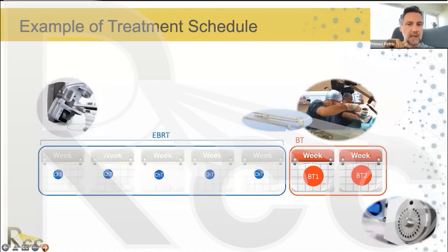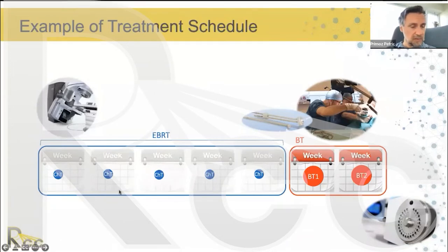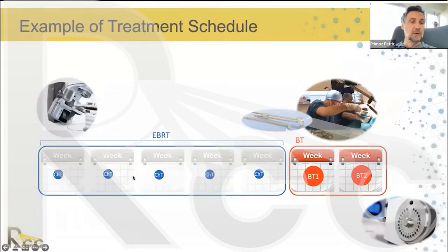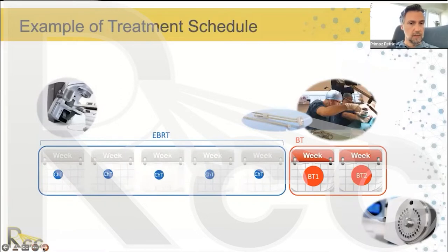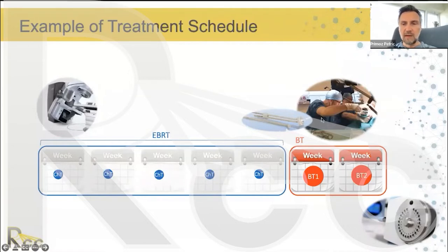A typical treatment schedule in cervix cancer brachytherapy consists of approximately five weeks of external beam radiotherapy. Recommended schedules around the world should not differ very much — usually up to five, sometimes six weeks of external beam radiotherapy, followed by brachytherapy, which typically follows in weeks six and seven. At the time of brachytherapy, we need to understand very well what type of applicator to use. Here we see one example of an intracavitary applicator inserted at the time of a brachytherapy procedure.